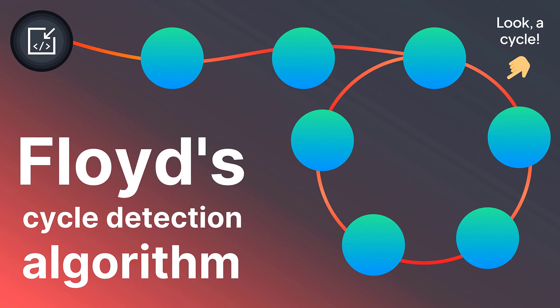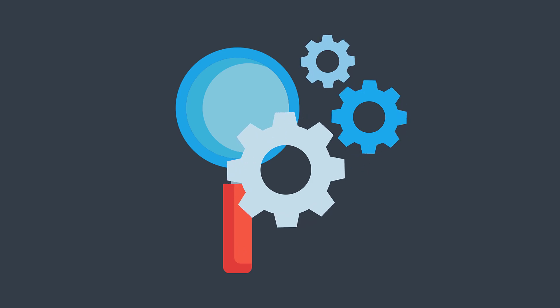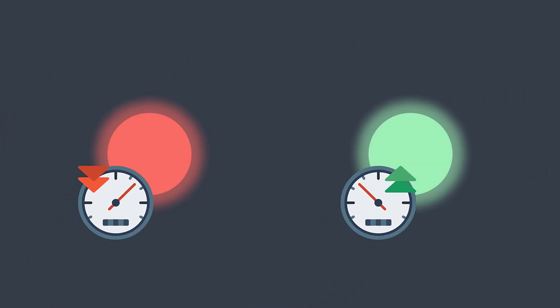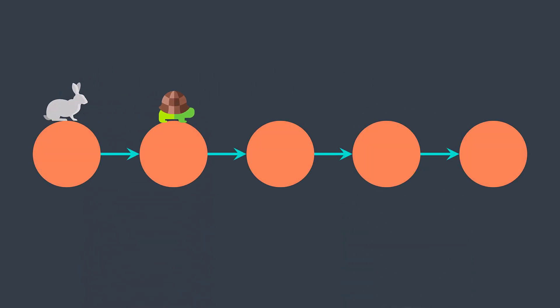The algorithm itself isn't that hard to understand, but the confusing part is understanding why it works. We'll first see how it works, then discuss the mathematical proof. This algorithm uses a slow pointer and a fast pointer — that's why it's also called the tortoise and hare algorithm. The tortoise represents the slow pointer and the hare the fast pointer. The slow one moves by one node at a time, but the fast one moves by two nodes at a time.